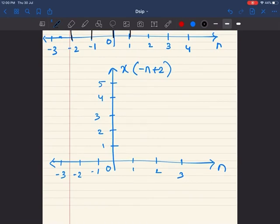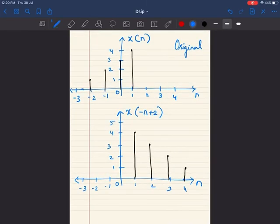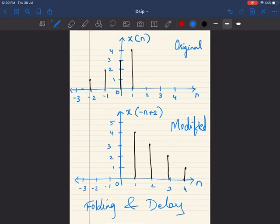And the modified signal is going to look something like this. So this is my original, this is my modified. And what is this called? This is called signal folding and delay.